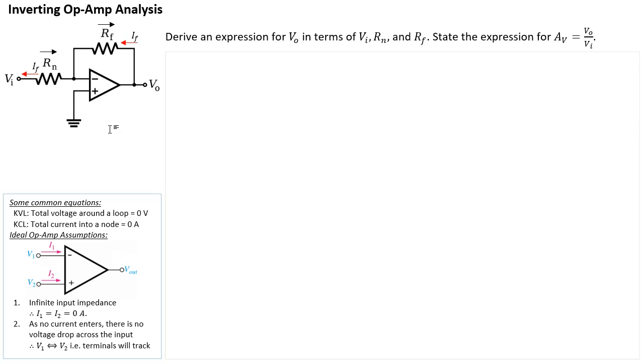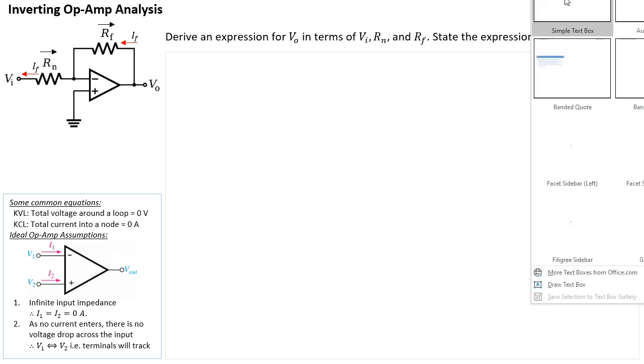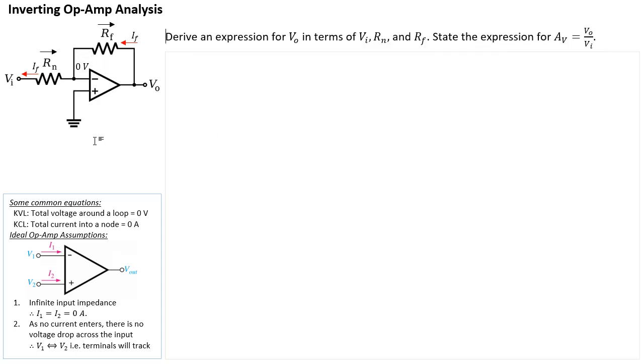Now the additional thing that we also need to consider is because of the second assumption where both terminals will track each other. So since the positive terminal is grounded, the non-inverting terminal is also grounded. This is what we call a virtual ground. So that means on this node here, it will also be at zero volts. So now we can write some expressions that links all these symbols together.